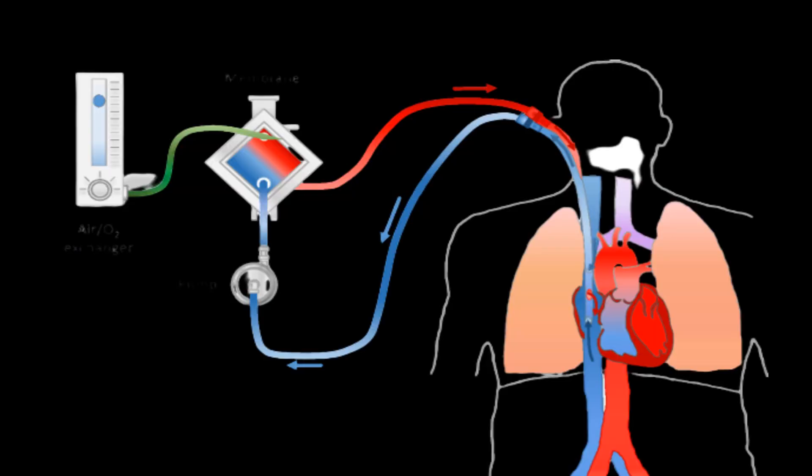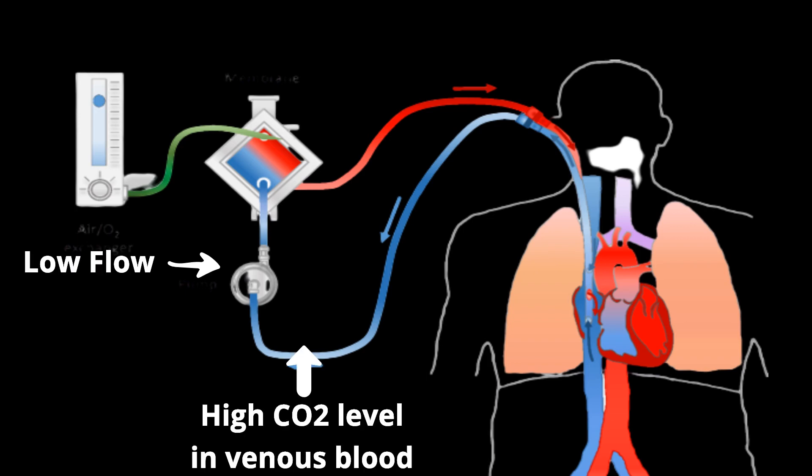The key concept underlying low-flow extracorporeal CO2 removal is that due to the high CO2 content in the venous blood, the metabolically produced CO2, which is roughly 150 to 200 milliliters per minute, may be theoretically removed from 400 to 500 milliliters of blood.